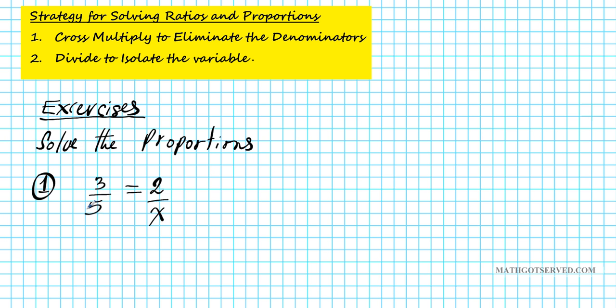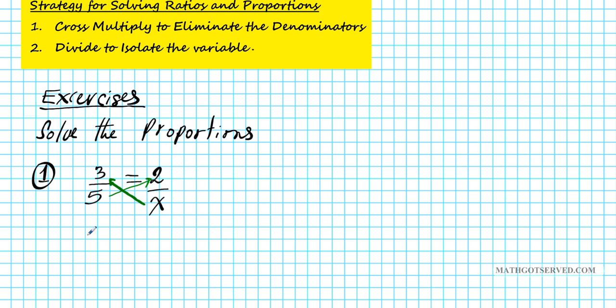If we cross multiply, we'll end up with just numerators with no denominators. Now, how do you cross multiply? Denominator on the left gets multiplied with the numerator on the right. Denominator on the right gets multiplied with the numerator on the left. Okay, so if you cross multiply, this proportion becomes 3x equals 10.